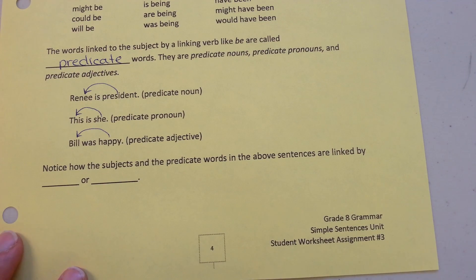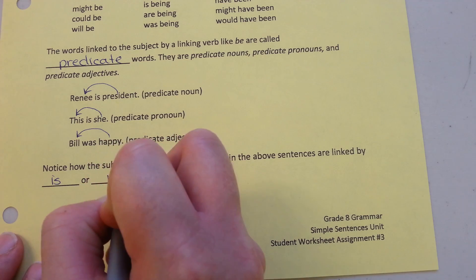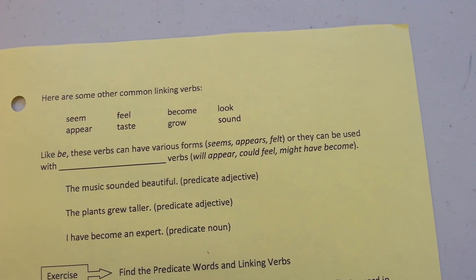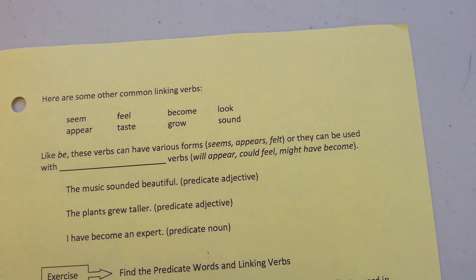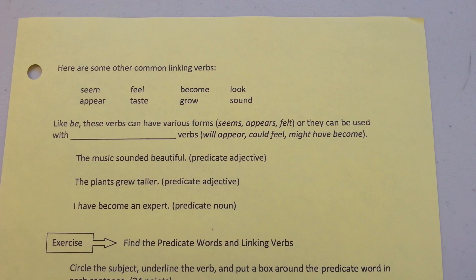Notice how the subject and the predicate words in the above sentences are linked by "is" or "was." Here are some other common linking verbs: seem, appear, feel, taste, become, grow, look, sound.